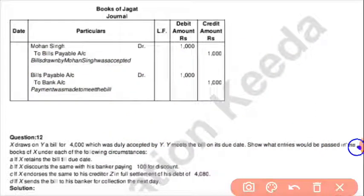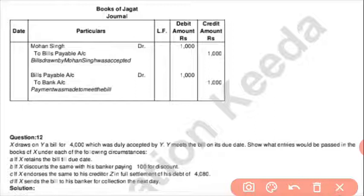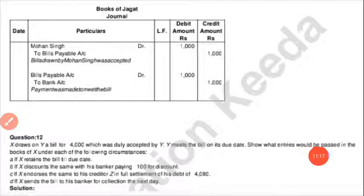Now see question number 12. Note down this question: X draws a bill for 4,000 which was duly accepted by Y. Y meets the bill on its due date. How are journal entries passed in the books of X under each of the following circumstances: (A) X retains the bill till due date; (B) X discounts the same bill with his banker paying 100 rupees discount; (C) X endorses the same to his creditor Z in full settlement of his debt. Do this question by yourself, and if you have a problem, you can make a phone call to me.